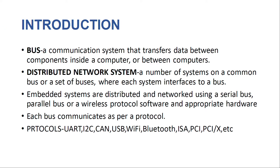As we all know, a bus means a communication system that transfers data between components inside a computer or between computers. It covers all related hardware components like wires, optical fibers, etc., and software components. A distributed network system means a number of systems on a common bus or a set of buses where each system interfaces to a bus. Embedded systems are distributed and networked using a serial bus, parallel bus, or a wireless protocol software and appropriate hardware.